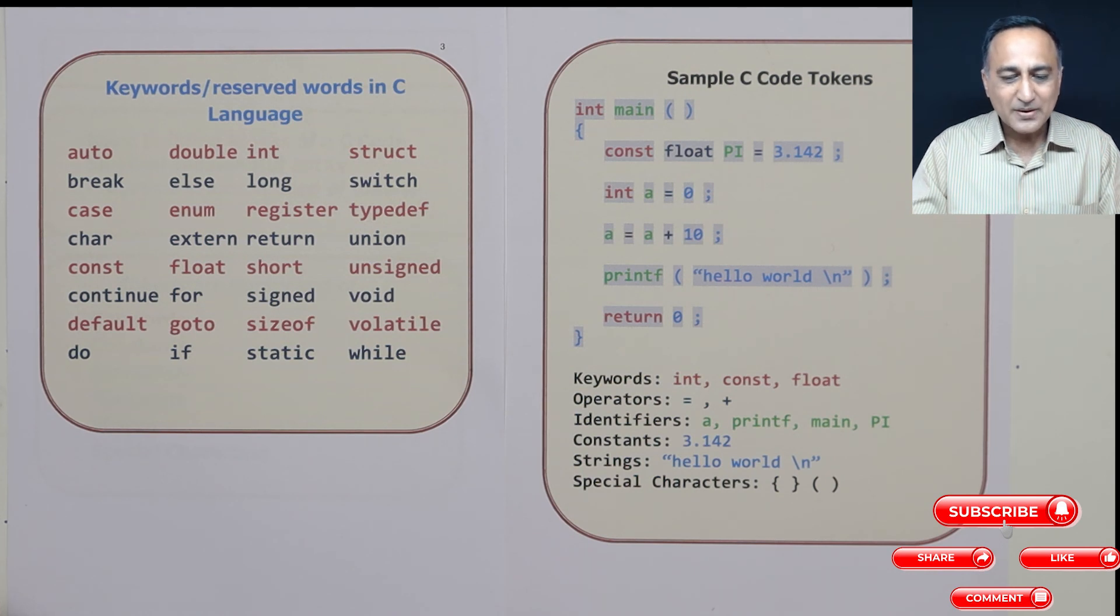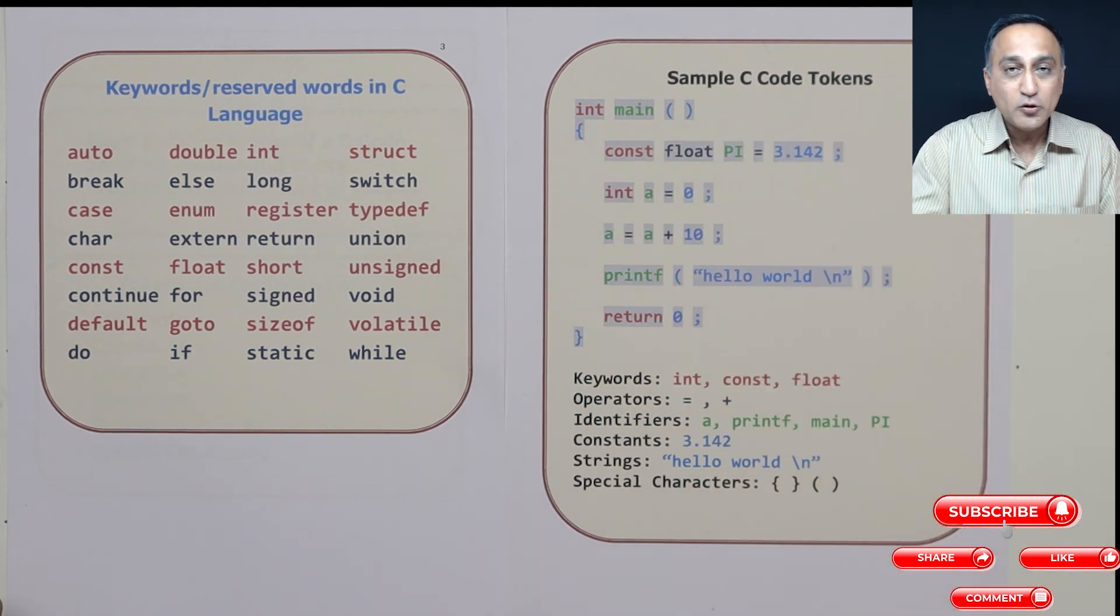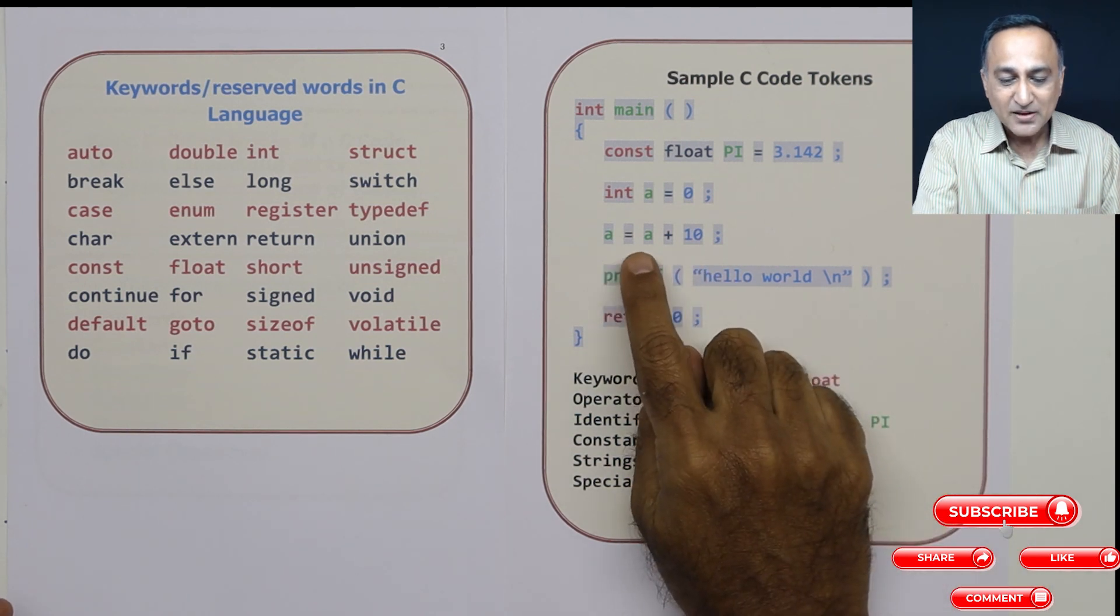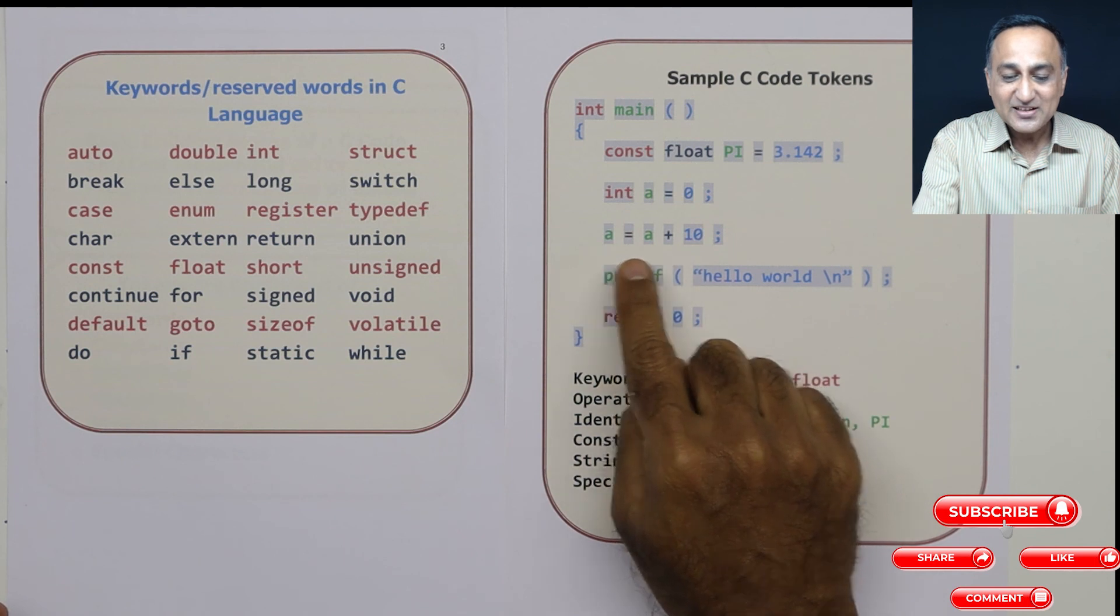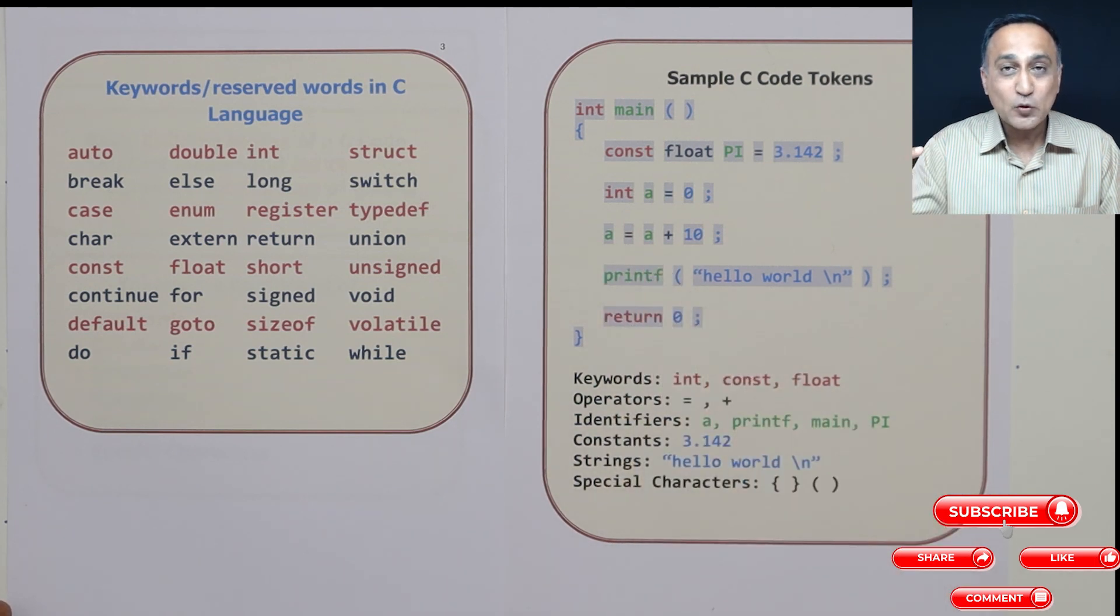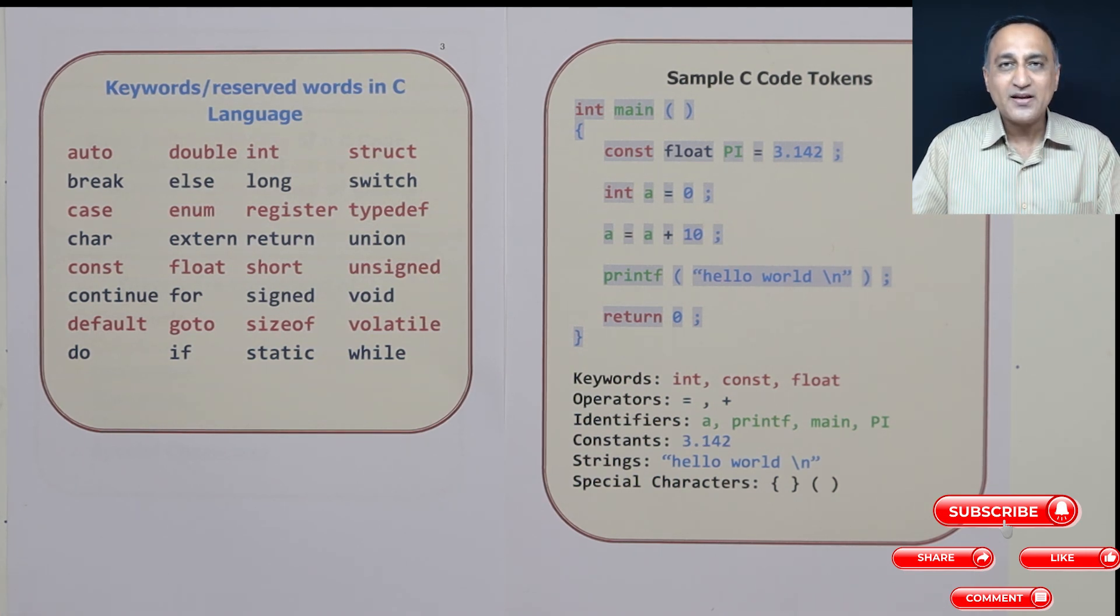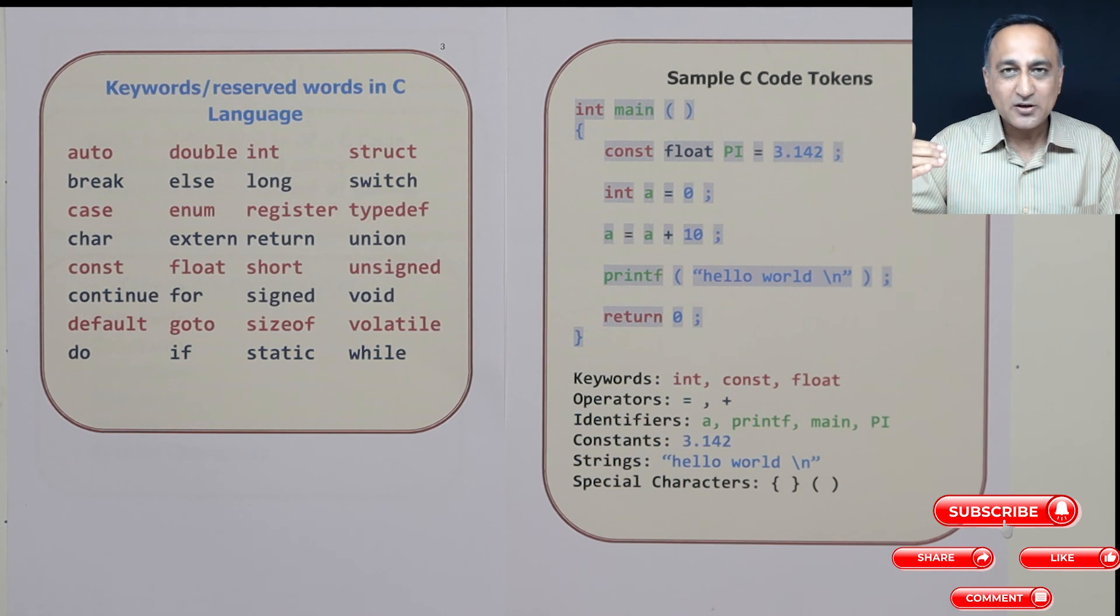What your compiler does is it will first break down your program into tokens, and then it will try to see if the arrangement of tokens is meaningful. For example, if I put plus a is assigned 10 here, then that is not a meaningful arrangement of tokens, because on the left side of the assignment you need to have a single variable.